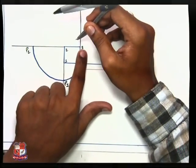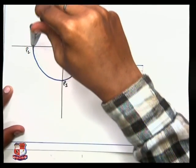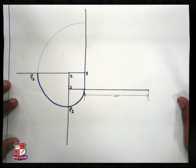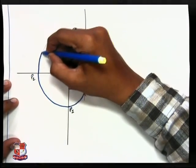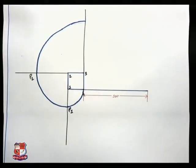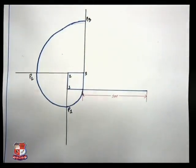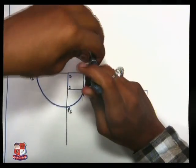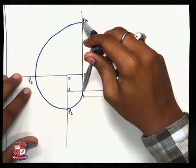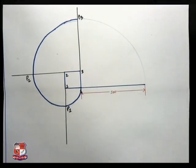Take 3 as center, 3-P2 as radius, and draw an arc. You will get arc like this. Let's give the name P3 to it. Take 4 as center.